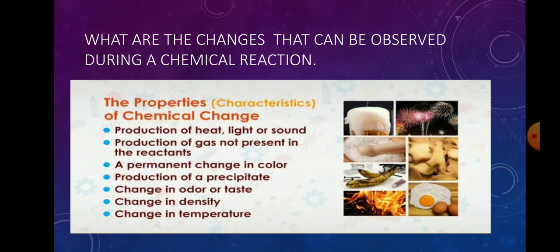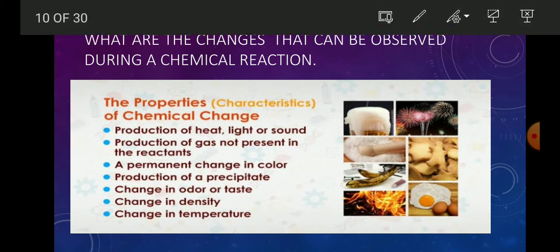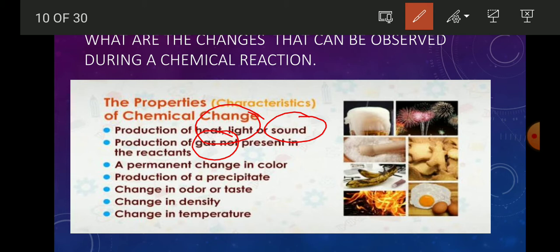Now let's find out what changes can be observed during a chemical change. There is production of heat, light, and sound; production of gases — when you observe bubbles coming out during a chemical reaction, that indicates gases are being released. Note: bubbles during boiling are a different condition. In normal reactions, bubbles may be of different gases like carbon dioxide, oxygen, or hydrogen, depending on the reactants.